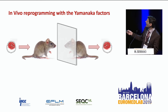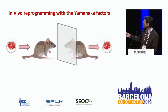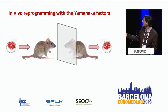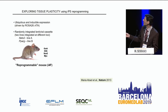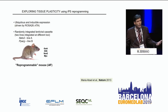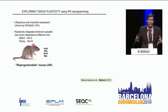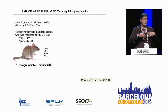We are trying to use the Yamanaka factors as a way to induce de-differentiation in vivo — trying to go backwards from the adult organism toward pluripotency, in mice. For that, we generated mice where we can induce, with doxycycline, all four Yamanaka factors in all cells. What we were expecting is that activating these factors everywhere in the body would make all cells go backwards in development, converting this adult mouse into a giant embryo.